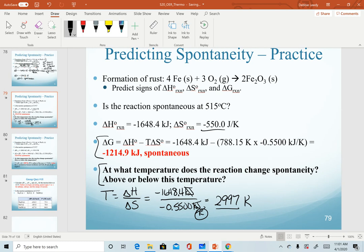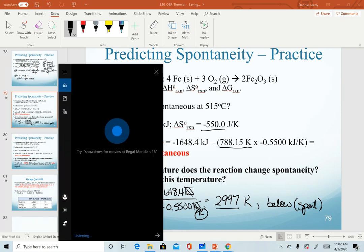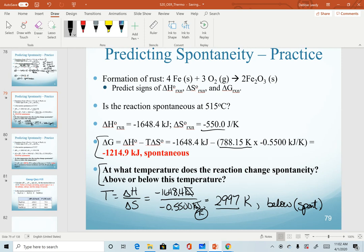Because our entropy goes to four sig figs, we are limited to four sig figs in our answer. And again, that is kelvin. So this is the temperature at which it changes spontaneity. Now we want to know if it's spontaneous above or below that. So again, two ways to answer that. One is we calculated previously that it was spontaneous at 788. So we already know that it is spontaneous below that temperature.